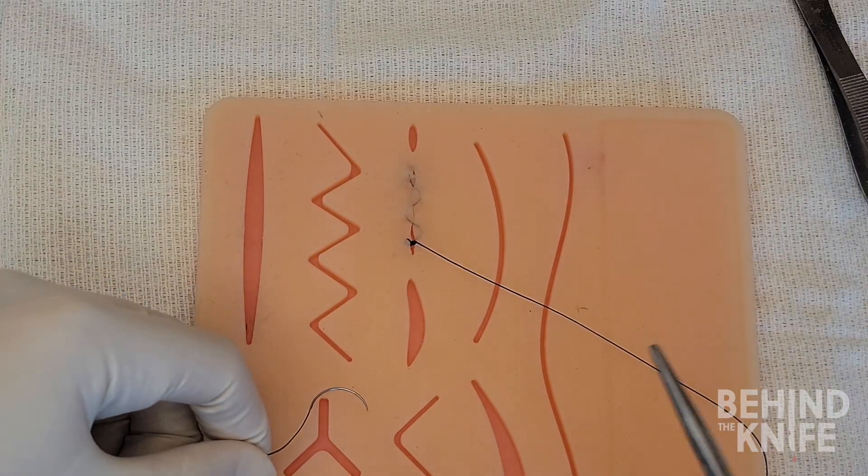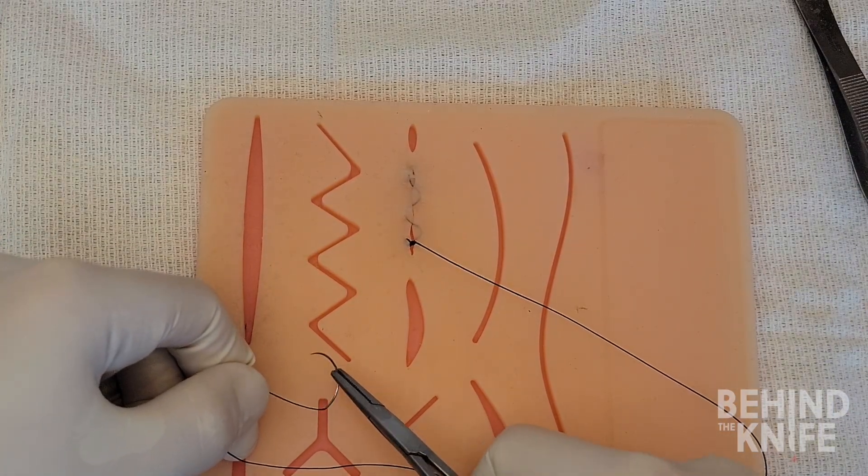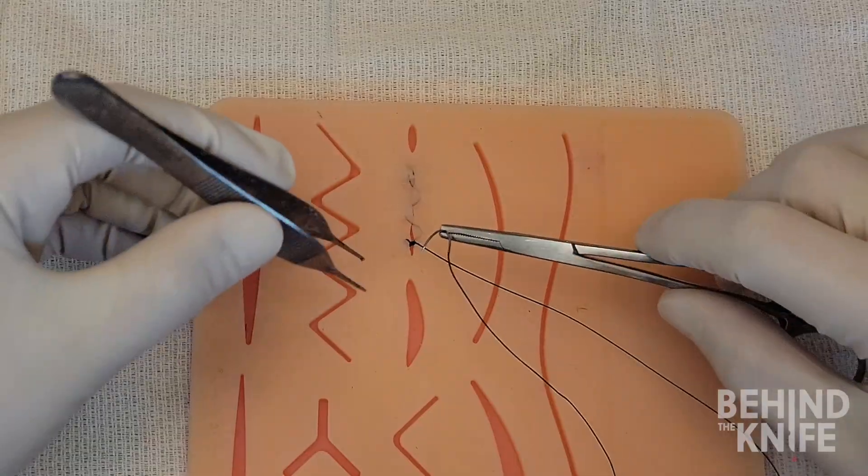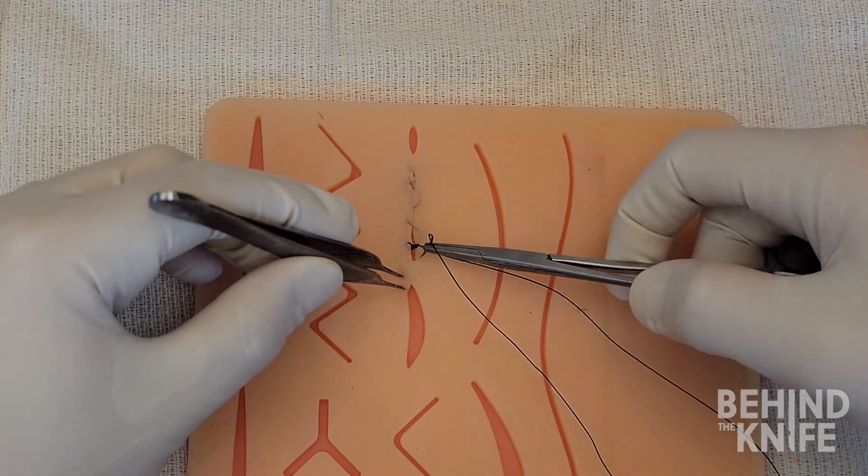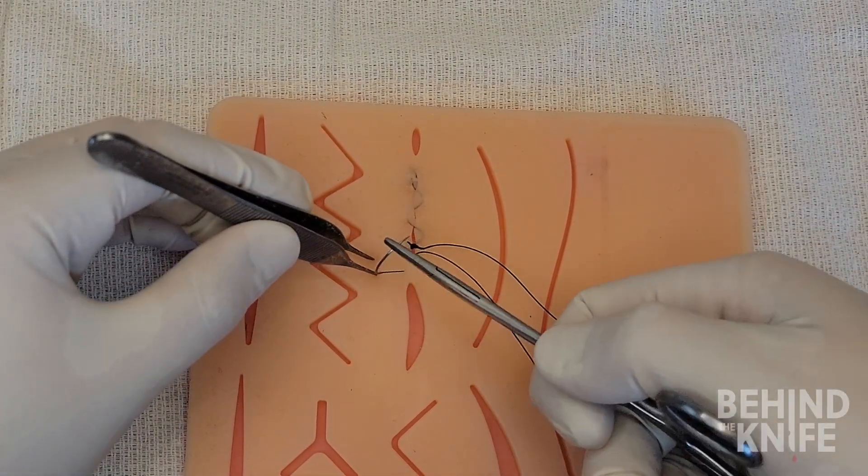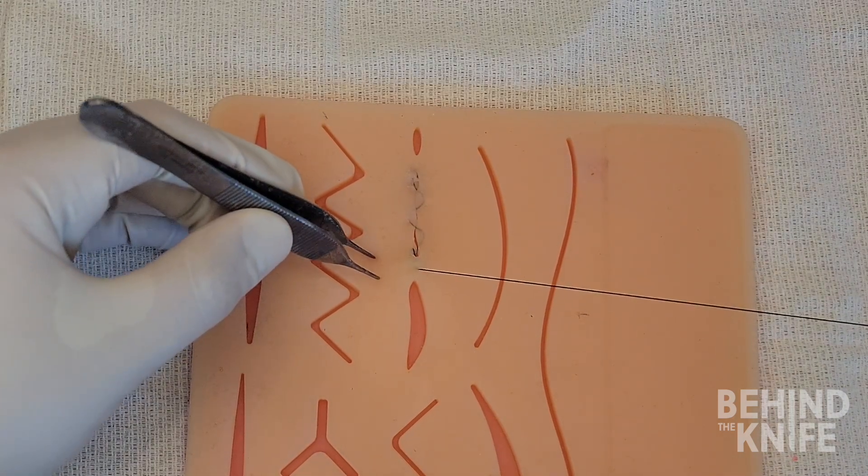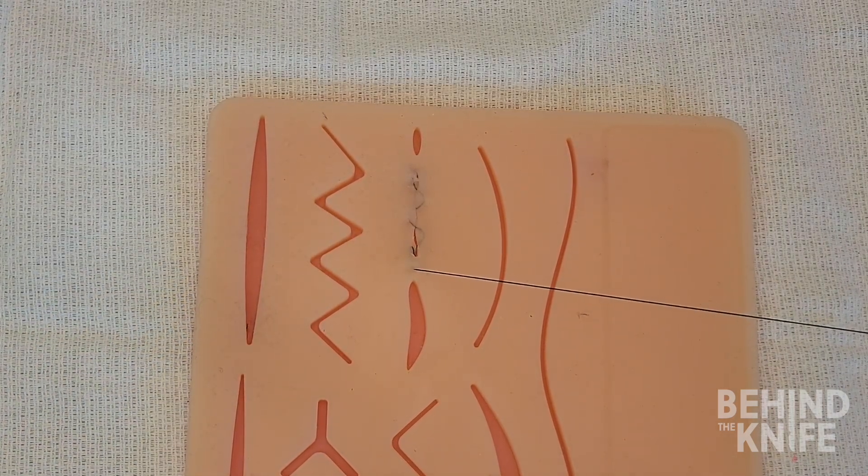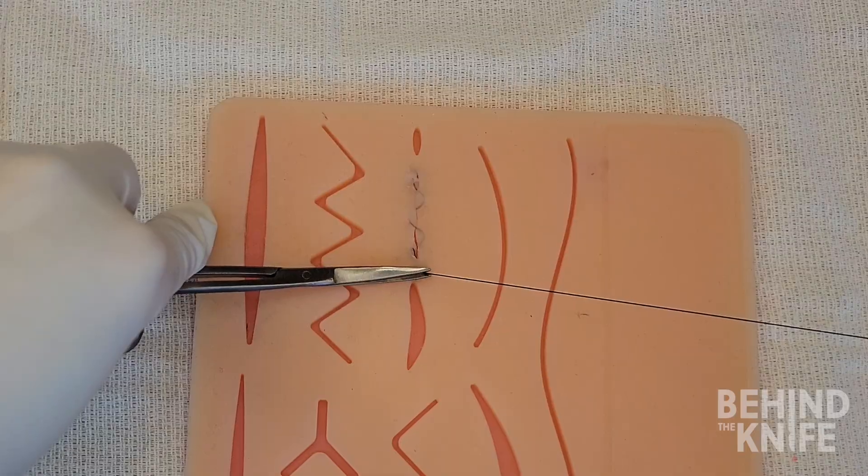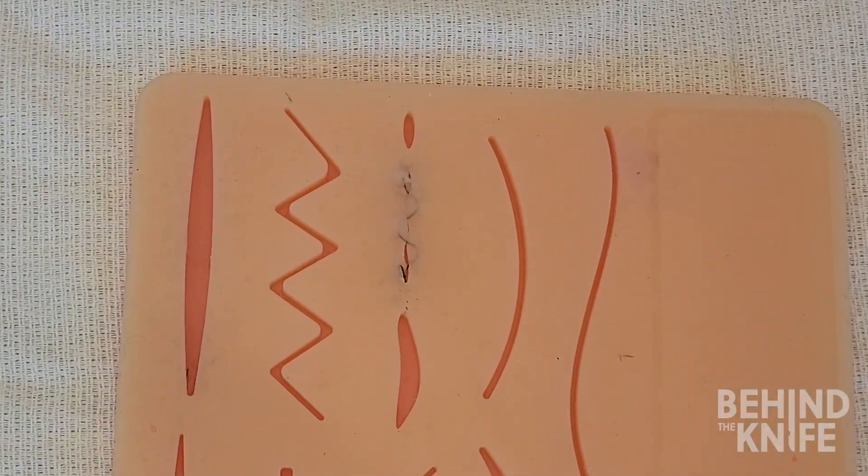Now from here, we can re-grasp the suture with our needle drivers and take a bite at the bottom apex of the wound to bury the knot we've just tied. Once you cut your suture flush against the skin, you've just completed a subcuticular running suture.